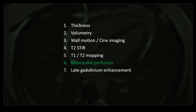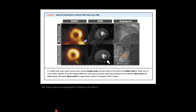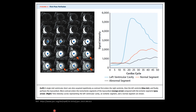Now coming to myocardial perfusion. Perfusion images are obtained as FLASH MOCO or motion-corrected images. First the contrast enters the right ventricle, then the left ventricle, then the entire myocardium enhances. You should look out for any non-enhancing areas, which could be a scar or an infarct. On a corresponding LGE image, enhancement in the same area is suggestive of infarct or scar. We can also see correlation of perfusion with SPECT and angiogram — non-enhancing areas on perfusion correspond to reduced uptake on SPECT and stenosis on angiogram in that vascular territory.